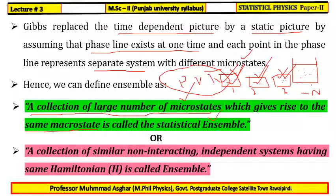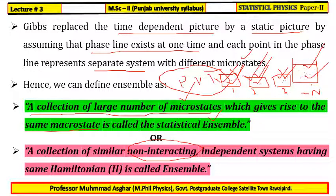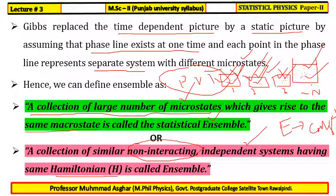This collection is called a statistical ensemble. In this case, whether we consider time average or ensemble average, the N particles are non-interacting. The Hamiltonian or energy of these particles is constant, not changing with respect to time. The macro state is the same and the systems are independent — no system depends upon any other.